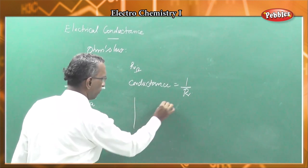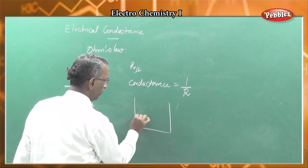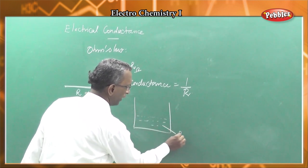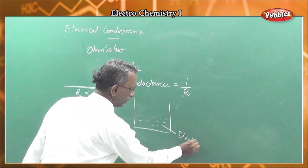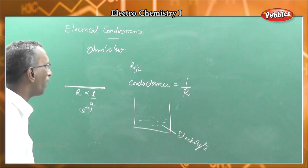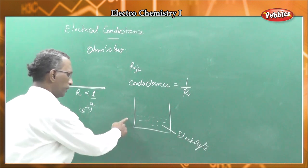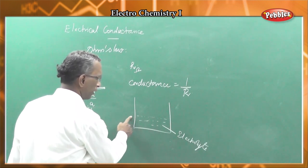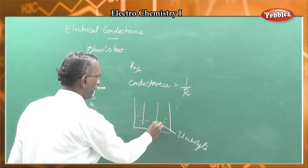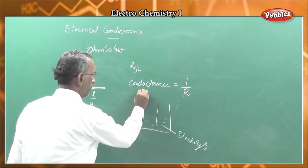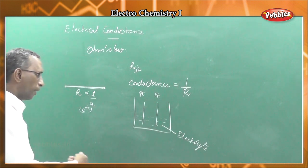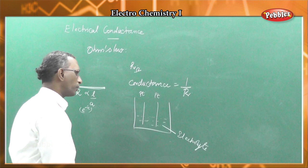Now, for electrolytic conduction, let us imagine a system. An electrolyte is a substance that is decomposed by the passage of electricity. A general aqueous solution such as a salt solution is a strong electrolyte. The cell consists of two platinum electrodes immersed in the electrolyte.